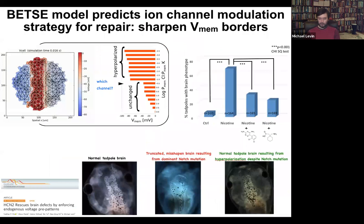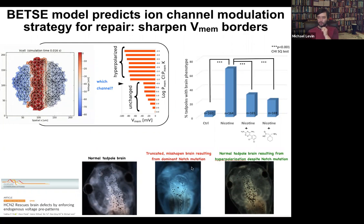Here is a normal tadpole brain — you see forebrain, midbrain, and hindbrain. If you introduce a mutated notch protein — notch is a very important neurogenesis gene — you can mutate it and introduce a dominant mutation. You can see the forebrain is basically gone, midbrain and hindbrain are just a bubble. These animals have no behavior to speak of. You can do the same thing with alcohol, nicotine, various teratogen exposures.